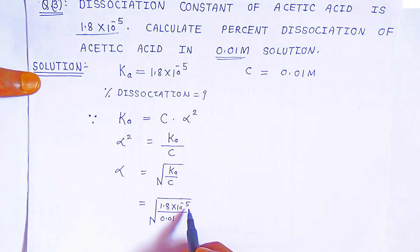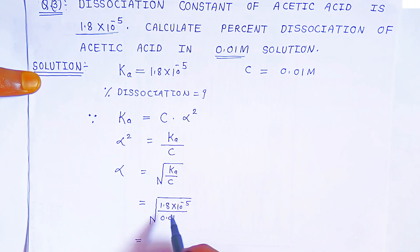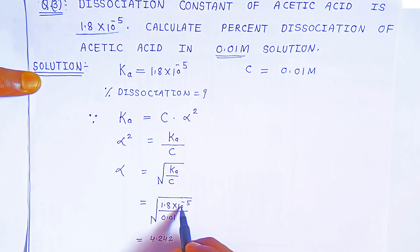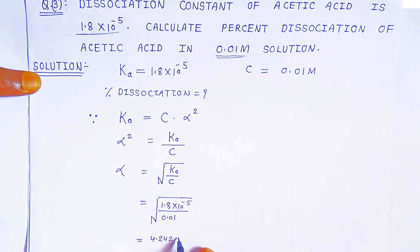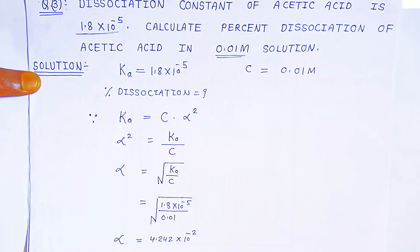When you take the square root of 18 it comes to 4.242. Since we have 10 raised to minus 3 under the square root, taking the square root gives 10 raised to minus 2 (approximately). So this is the degree of dissociation alpha — we have got alpha equal to 4.242 into 10 raised to minus 2.